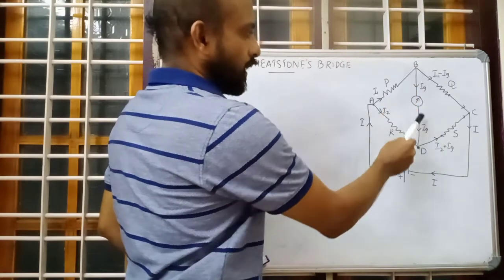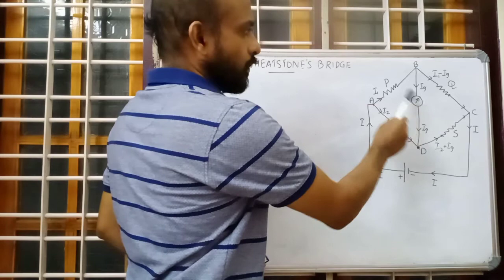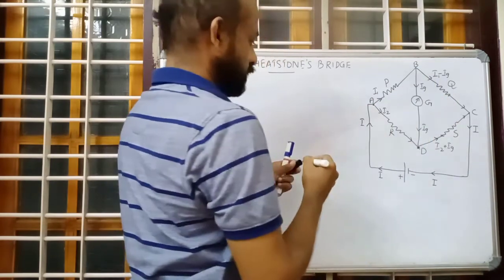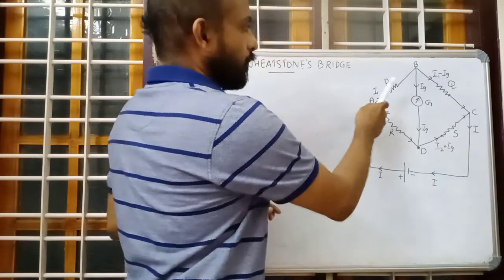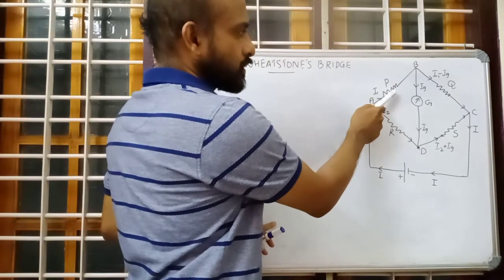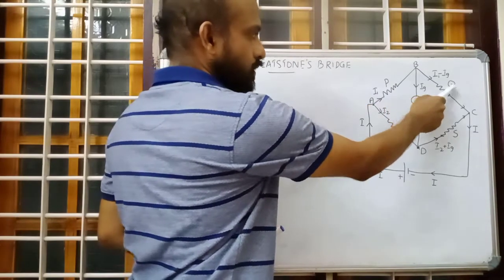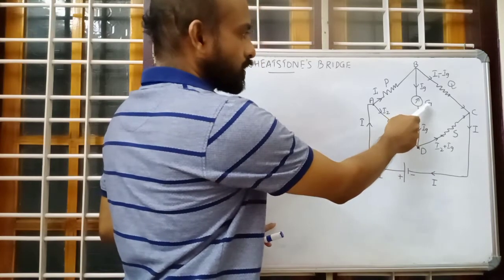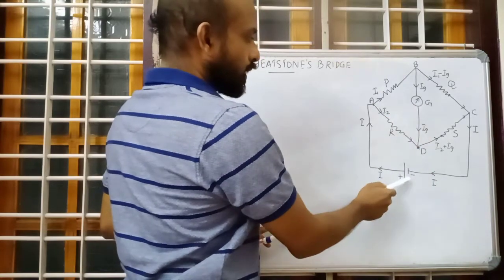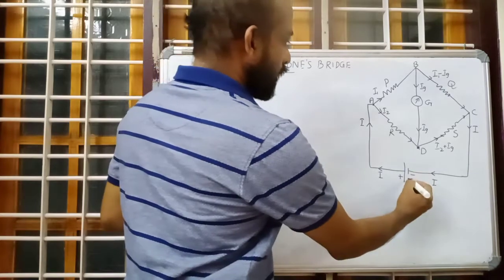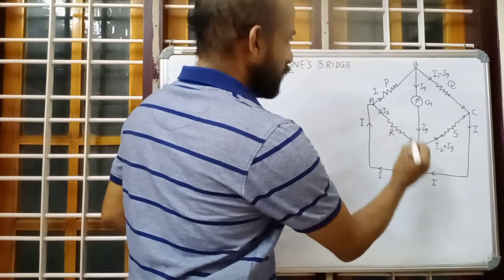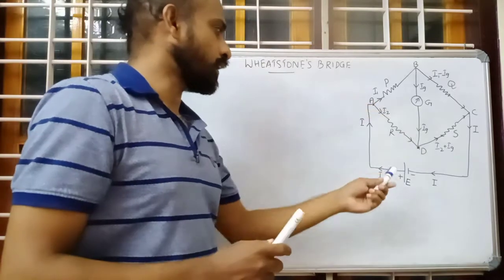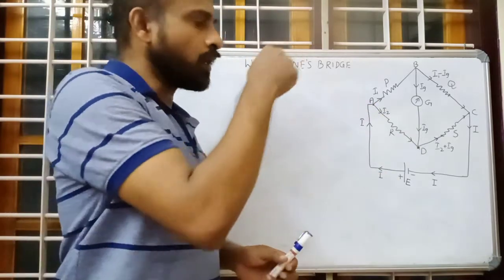Then we have a galvanometer connected. The galvanometer has a resistance G. P is the resistance of this resistor, Q is the resistance, S is the resistance, R is the resistance, and the galvanometer has resistance G. We have connected a cell also, having an EMF of E. So we have arranged the resistors, galvanometer and cell in a quadrilateral shape.